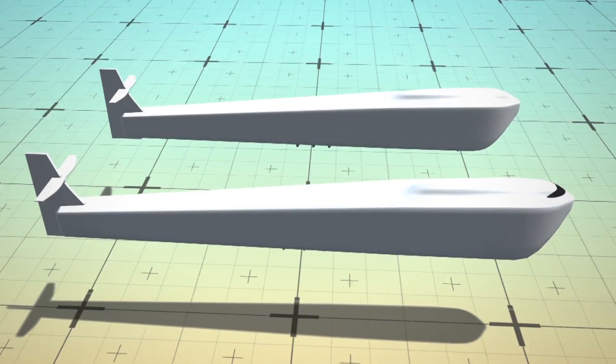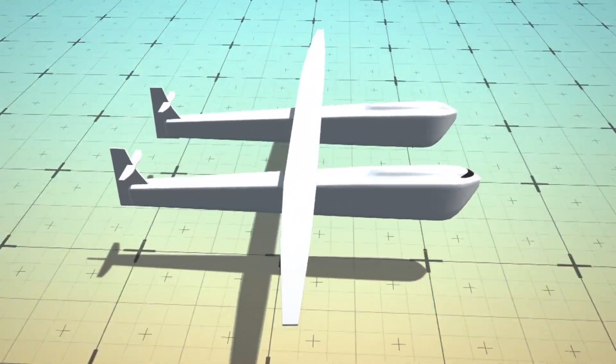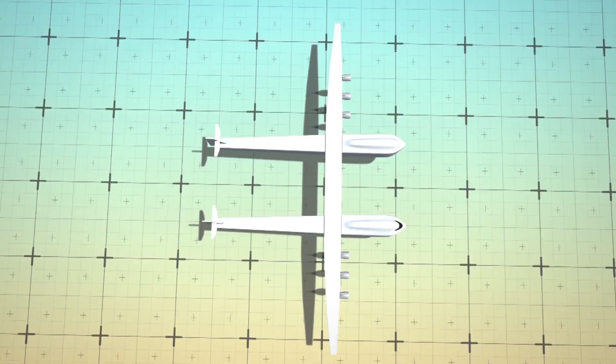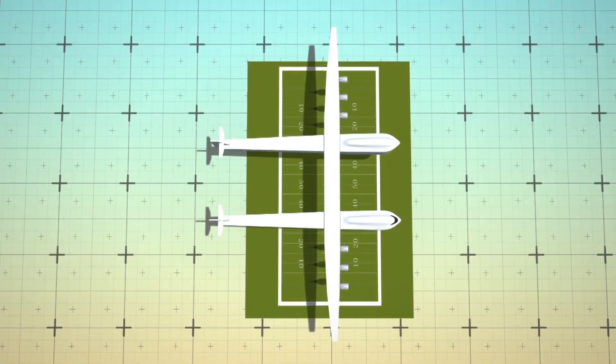The Stratolaunch plane is made up of two twin fuselages and massive wings. It is propelled by six Boeing 747 engines. The aircraft is wider than a football field due to its 117-meter wingspan.